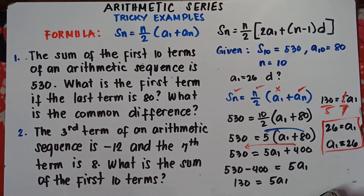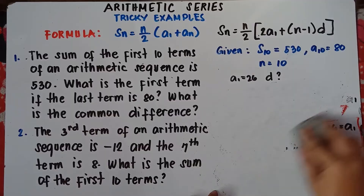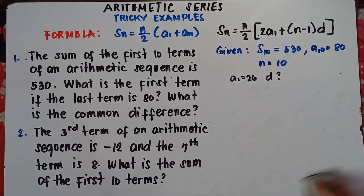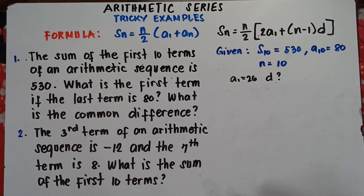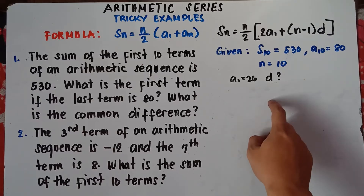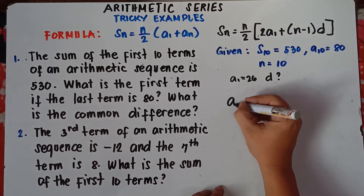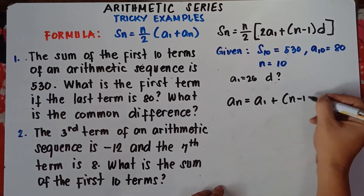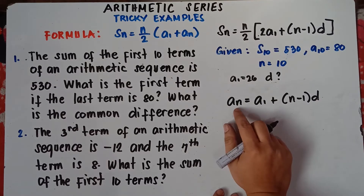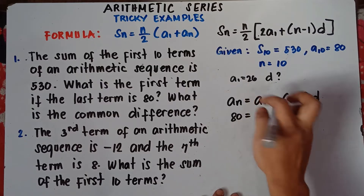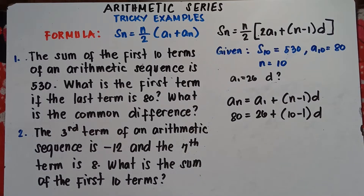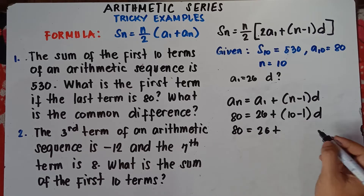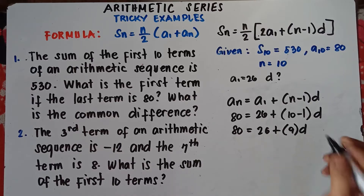Now we can find the common difference. The arithmetic sequence formula is: a sub n equals the first term plus n minus 1 times the common difference. We already have the last term a sub 10 equals 80, the first term is 26, and n is 10. So: 80 equals 26 plus 10 minus 1 times D, which gives 80 equals 26 plus 9D.